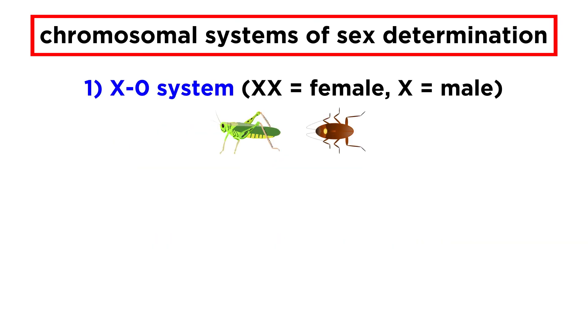The X0 system is found in certain insects, like grasshoppers and cockroaches. Here there is only one sex chromosome, the X chromosome. Females have two, and males have one.